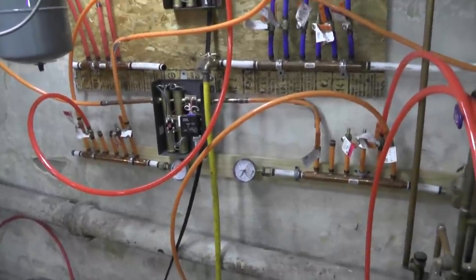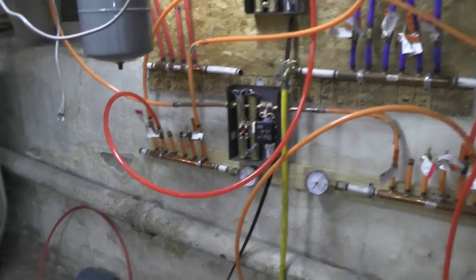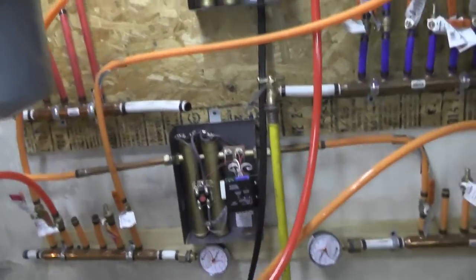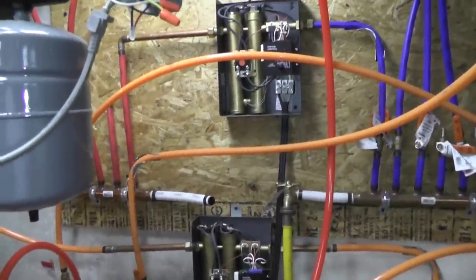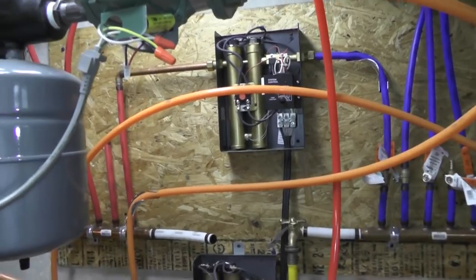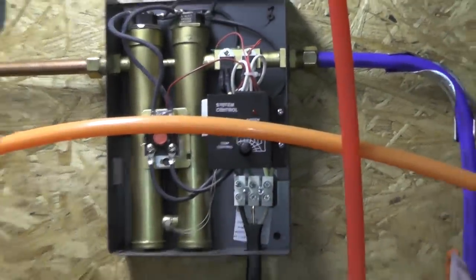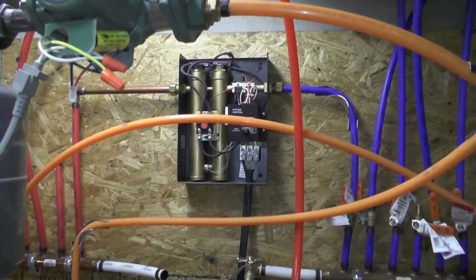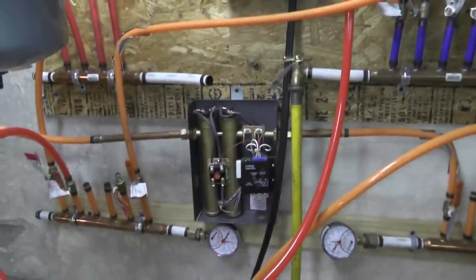As you can see here I'm using two instant-on on-demand electric water heaters. This one here is used for the potable water for the bathroom, the shower, the kitchen, and I'm using this one to heat the water for the radiant floor system.